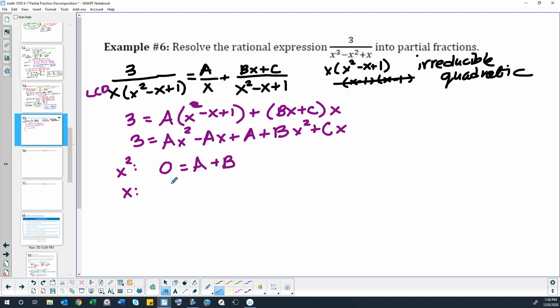And then on the left we have 0x terms, and we have a negative a here and a positive c there. And then our constant terms, we would have 3 on the left, and just a on the right, so a equals 3.